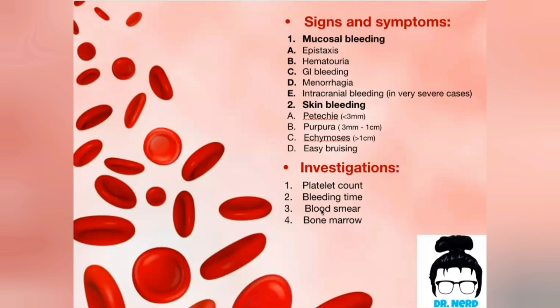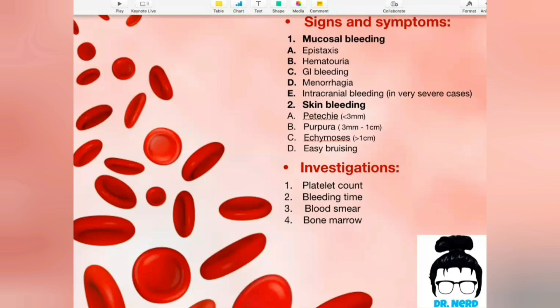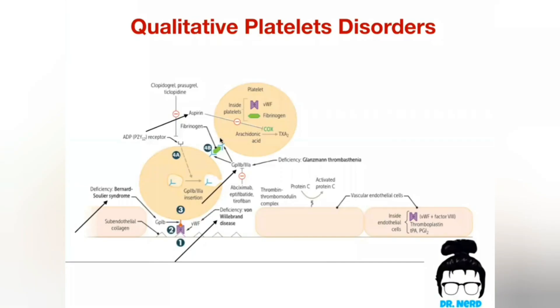We do bone marrow biopsy to follow the platelet precursor, megakaryocytes. If megakaryocytes are low in the bone marrow, then we know something is wrong with the bone marrow, not the blood. Moving on to qualitative platelet disorders — by qualitative, we mean something is wrong with the platelet quality, not the count.